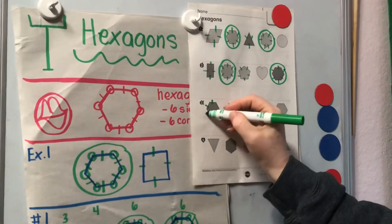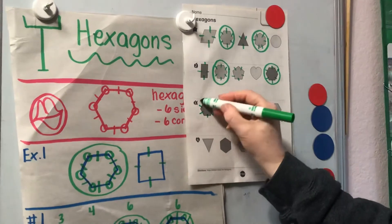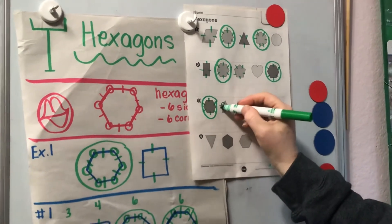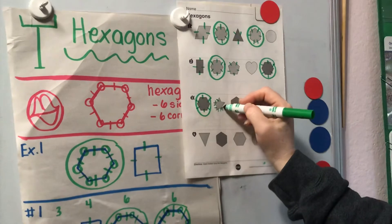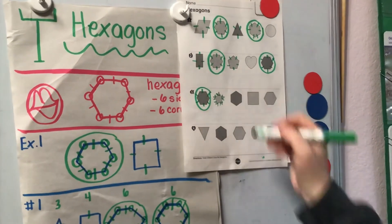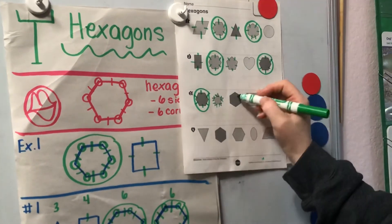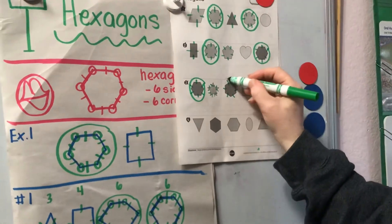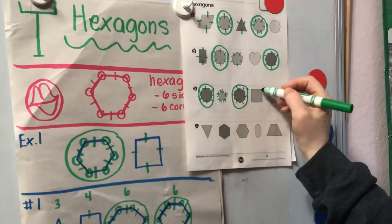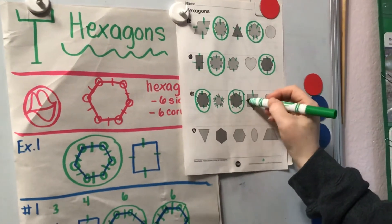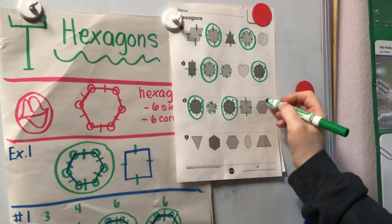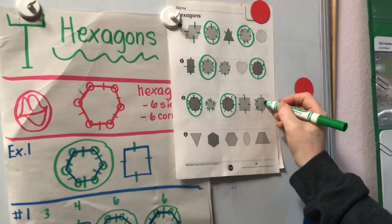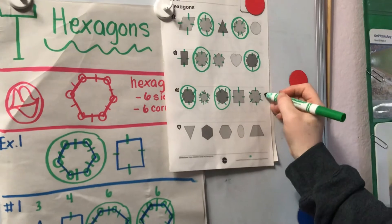One, two, three, four, five, six — hexagon. Oh my goodness, look at the star: one, two, three, four, five, six, seven, eight, nine, ten — nope! One, two, three, four, five, six — hexagon. One, two, three, four — nope, square. One, two, three, four, five, six — hexagon.